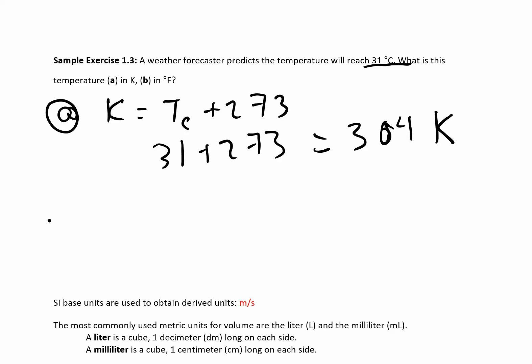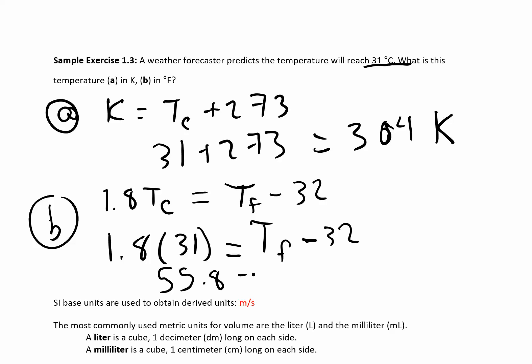That's going to give us 304 Kelvin. For part B, if you want to find the Fahrenheit you would say the equation is 1.8 times the Celsius temperature is the Fahrenheit temperature minus 32. So we would take 1.8 times 31 equals the Fahrenheit temperature minus 32. When you work all this out, multiply 1.8 times 31, then you're going to add 32 on both sides. We have 55.8 equals TF minus 32, and then add 32 here.